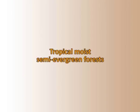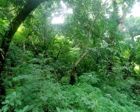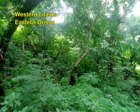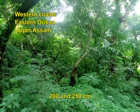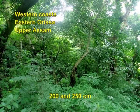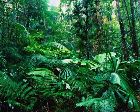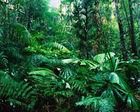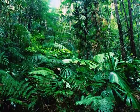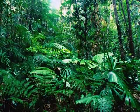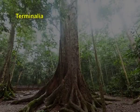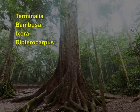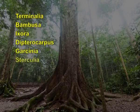Tropical moist semi-evergreen forests are found along the Western Ghats, Eastern Orissa, and Upper Assam, where annual rainfall is between 200 and 250 cm. They are characterized by giant and luxuriantly growing, intermixed, deciduous and evergreen species of trees and shrubs. The important plants in these forests include species of Terminalia, Bombax, Ixora, Dipterocarpus, Garcinia, and Sterculia.